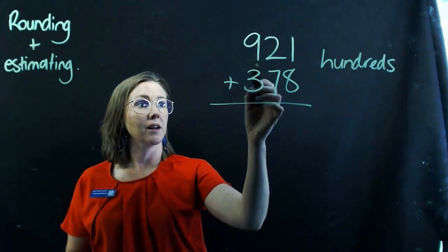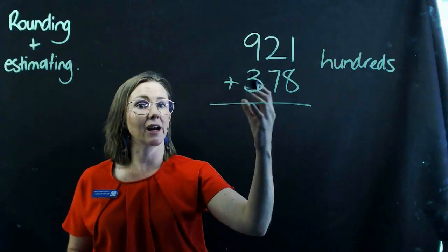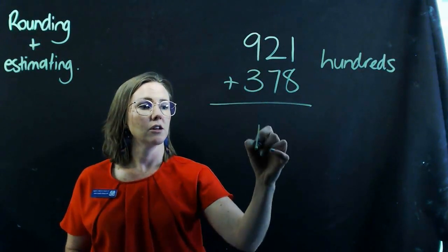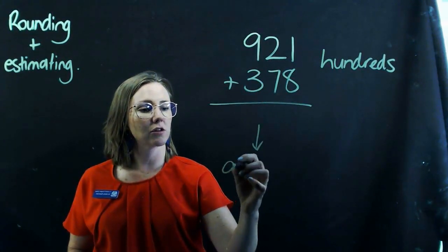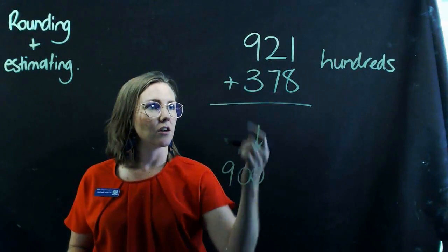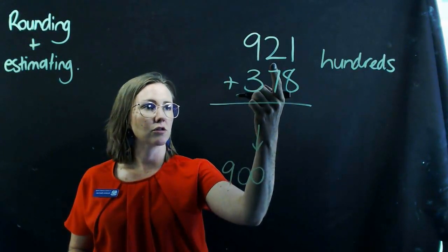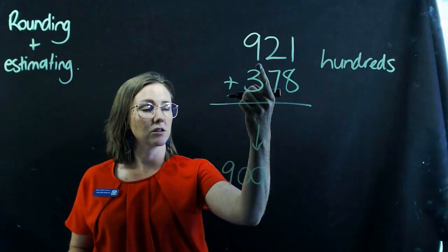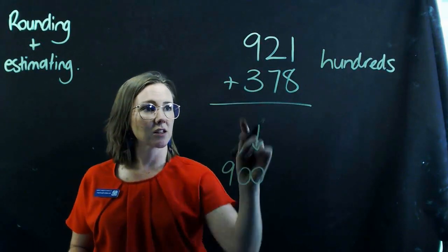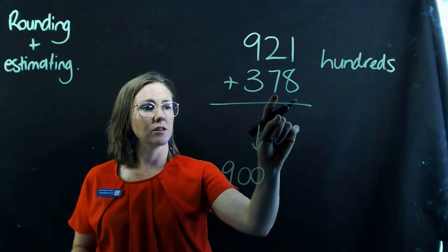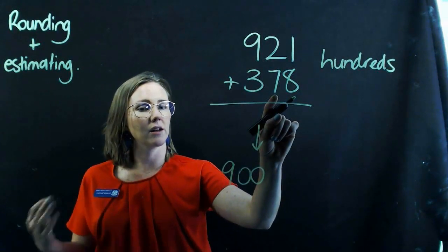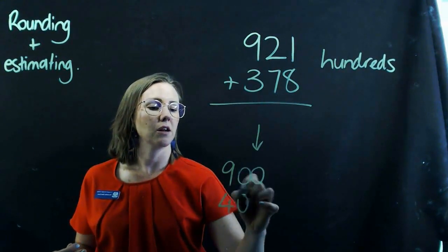So I need to look at my next column, my tens column, to work out what to do with my hundreds. So your estimation should look like this. 900, because this is a 2. So I've rounded it to the nearest hundred, which is 900. And then this actually becomes 400, because this is above 5. So I would round it up to the nearest hundred, being 400.